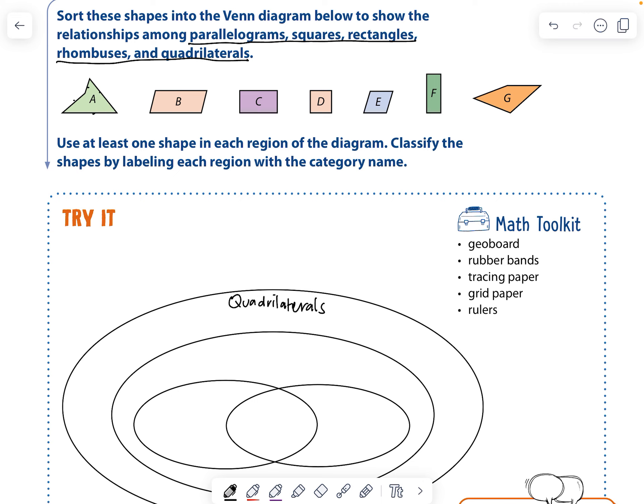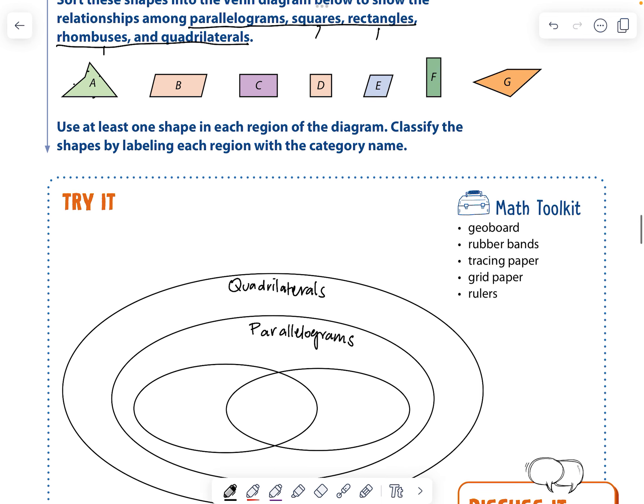Okay. The next one would be parallelograms because squares, rectangles, and rhombuses are all parallelograms. Then we have squares are going to be in the middle because squares can be a rectangle and a rhombus. But a rhombus cannot be a rectangle and a rectangle cannot be a rhombus.